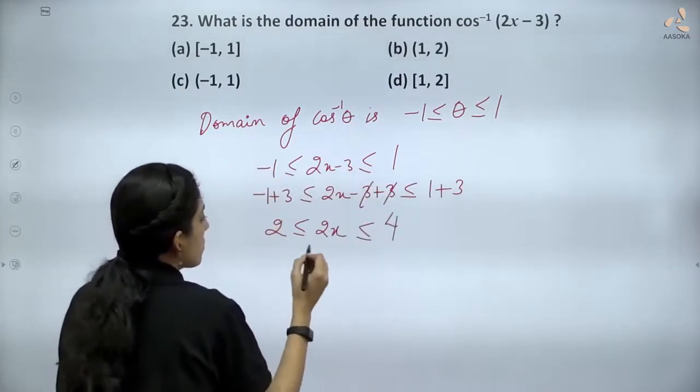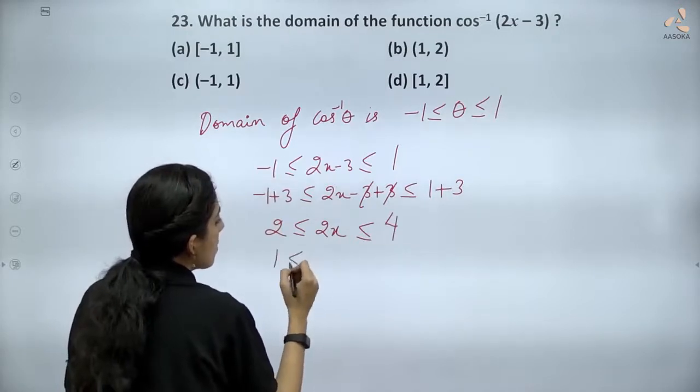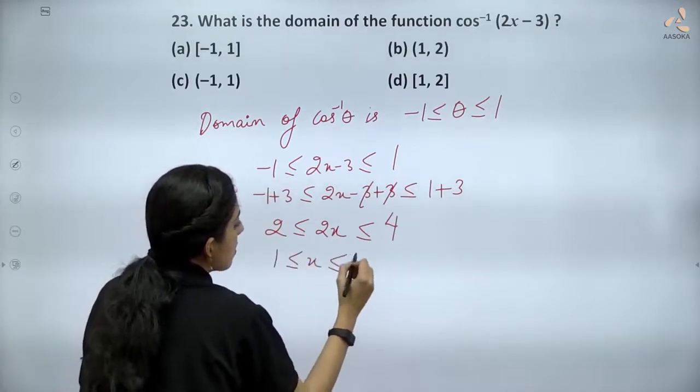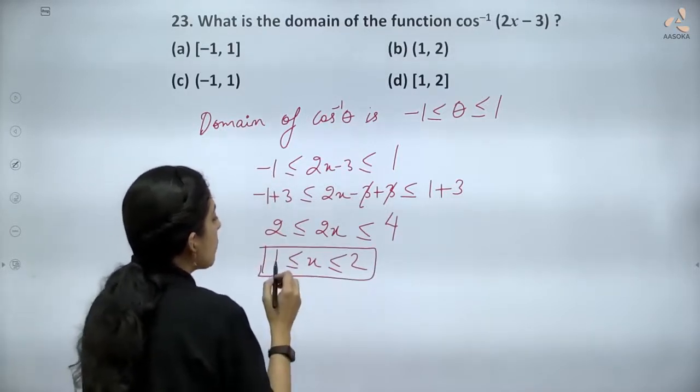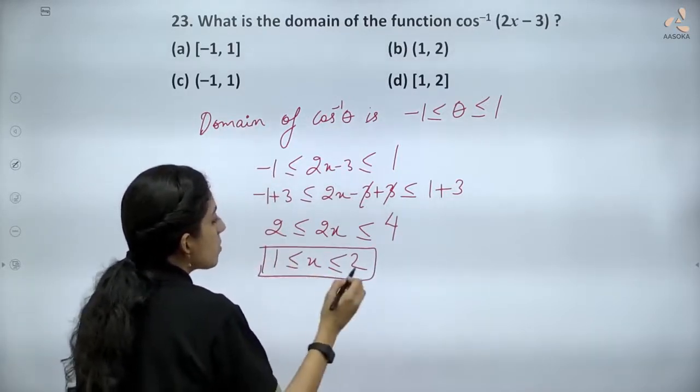Dividing by 2, you can write 1 less than equal to x less than equal to 2. That means x lies between 1 and 2 where 1 and 2 are included.